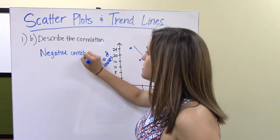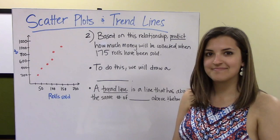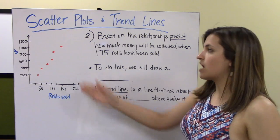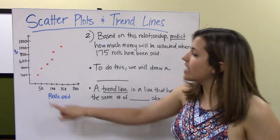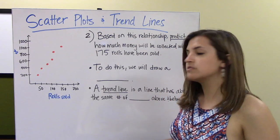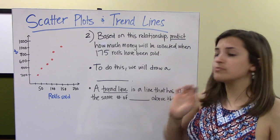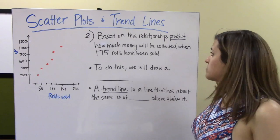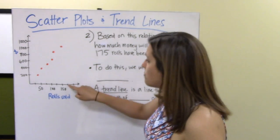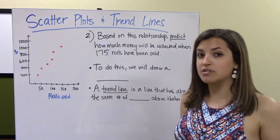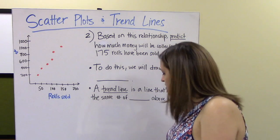Let's talk about the second part of this lesson, which is about trend lines. In problem number two, we're given a scatter plot representing the total money collected in a wrapping paper fundraiser. The x-axis shows number of rolls sold and the y-axis shows money collected. The question asks us to predict how much money will be collected when 175 rolls have been sold. Since there's no point for 175 rolls on the graph, we're going to predict using a trend line.